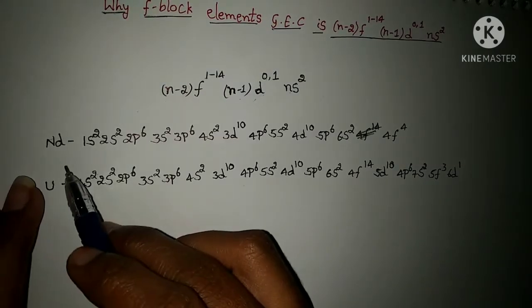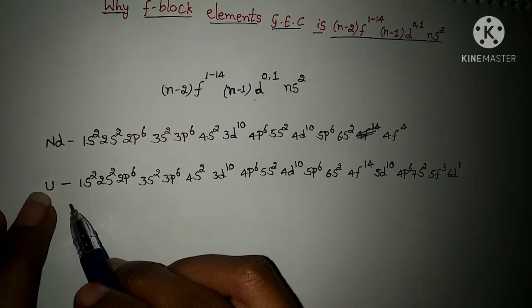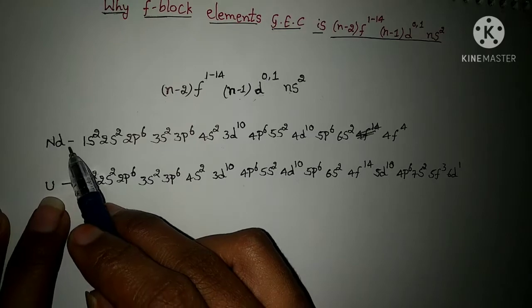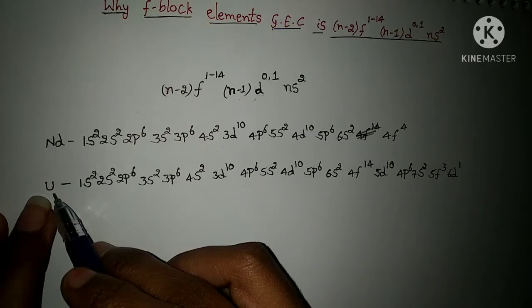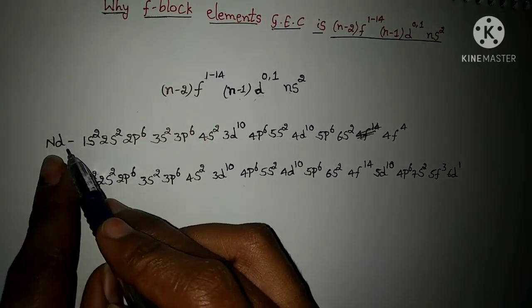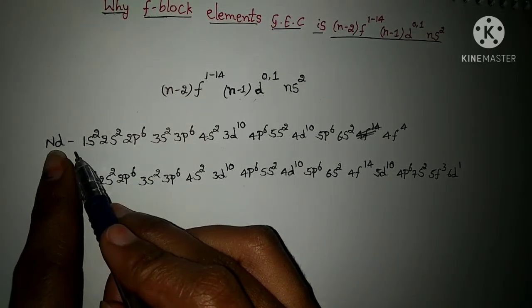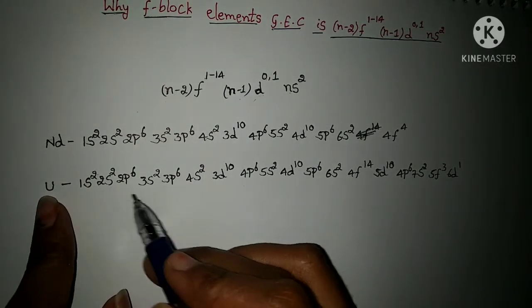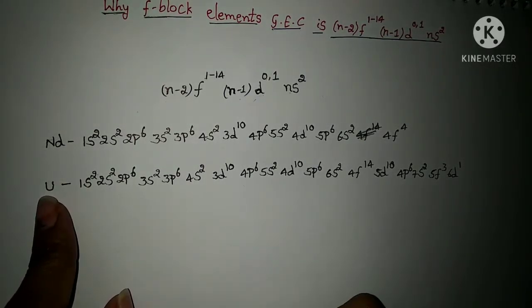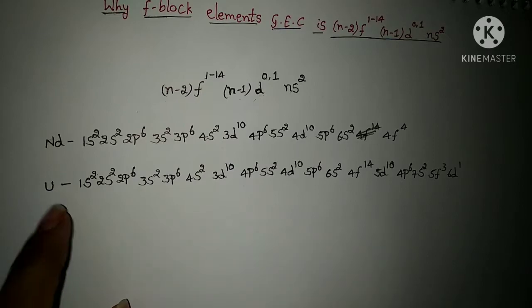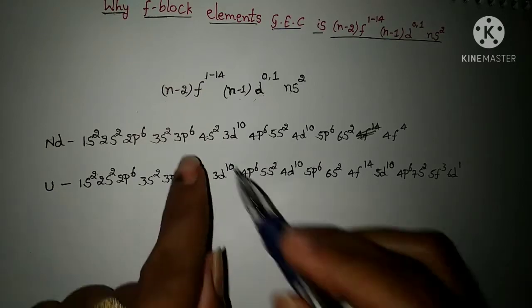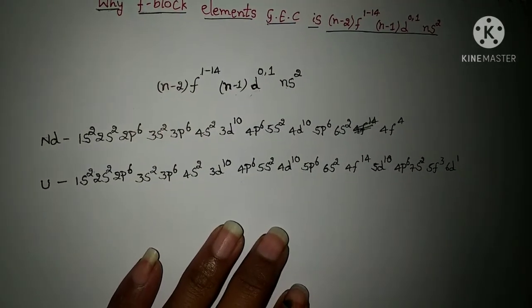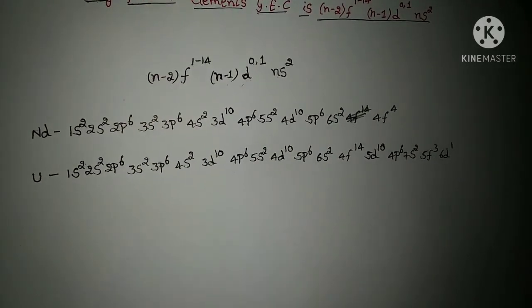I am taking two elements to help you understand this topic better. The two elements I have taken are neodymium and uranium. Neodymium is taken from the 4f series and uranium is taken from the 5f series — one element from each series to explain this topic.